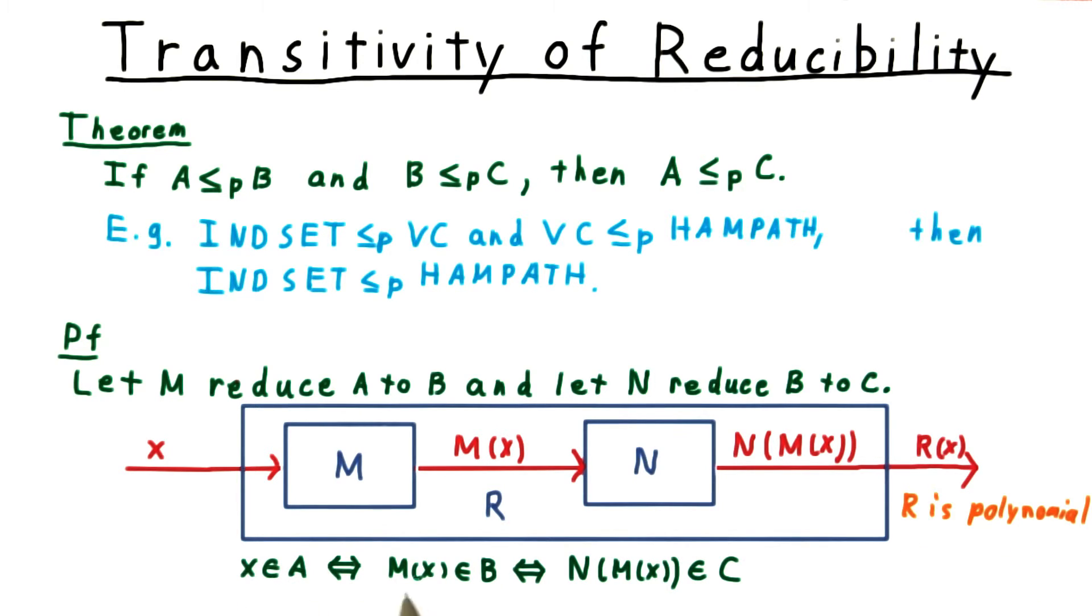Thus, X is in A if and only if M of X is in B. Remember, M implements that reduction. And M of X is in B if and only if N of M of X is in C, because N implements that reduction.